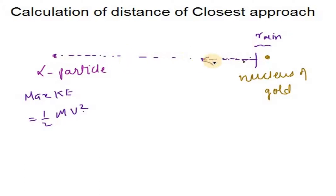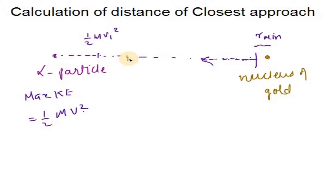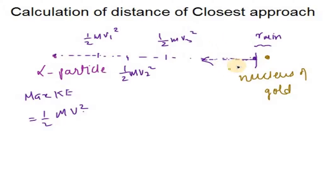That stopping distance is called R minimum — the minimum distance of approach — and then it comes back. We have seen that one particle out of 20,000 particles was coming back to its initial position. As it approaches the nucleus, its kinetic energy is gradually decreasing: half mv1², half mv2², half mv3², until it becomes zero.